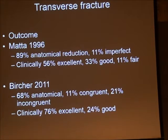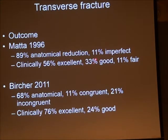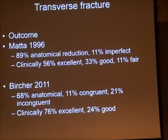What are the outcomes? For transverse fractures, Matta's series achieved 89% anatomical reduction with 56% excellent, 33% good, and 11% fair results. In Burgess's series, following approximately 160 cases over 10 years, anatomical reduction was achieved in just under 70% of cases, with 75% excellent results.